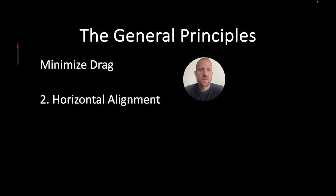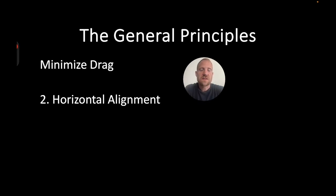We are continuing to examine the general principles of fast swimming and we're focusing on minimizing drag, specifically looking at horizontal alignment. The more horizontally aligned a swimmer can move through the water, the faster they are going to swim. It's important to understand these concepts and to be able to see them, because ultimately coaching is a visual art — you need to see what athletes are doing, be aware of it, and design interventions to help them improve. So let's get into horizontal alignment and see what it looks like in all the different strokes.